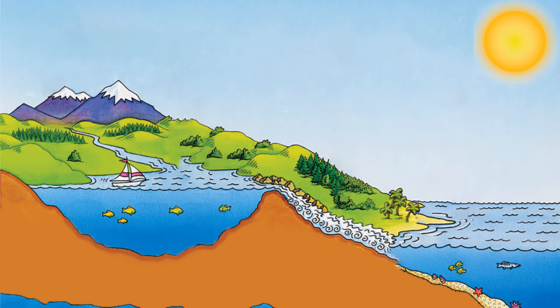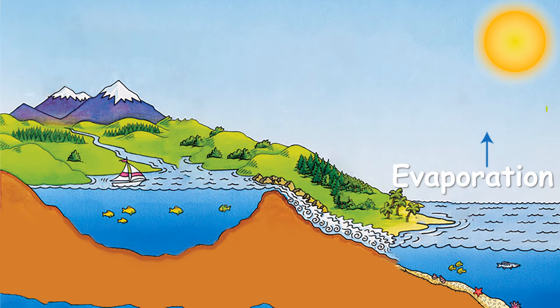During evaporation, the sun provides the heat for the water to turn from liquid to gas, forming water vapor. This gas is light, so it rises up from the surface and accumulates in the atmosphere.